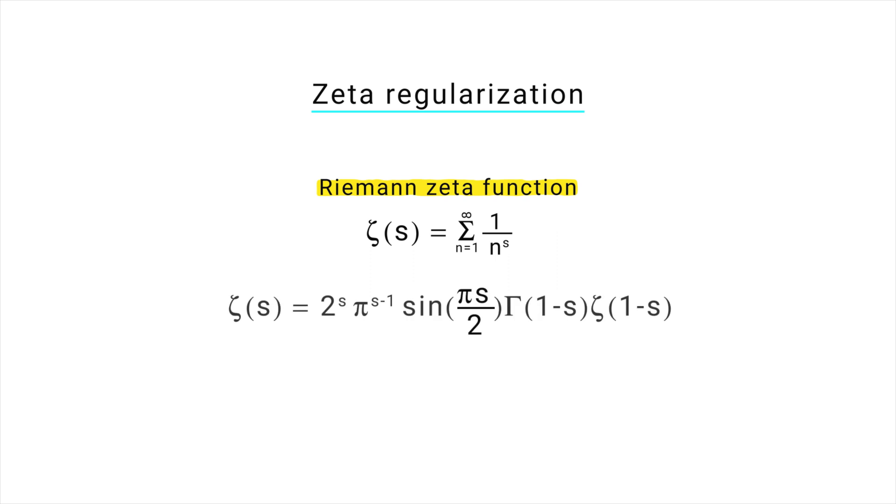The formula is... don't worry if you don't understand what that means. The important thing is that this formula gives us a way to calculate zeta function for any values of s, except for s equal to 1.